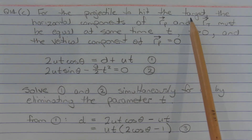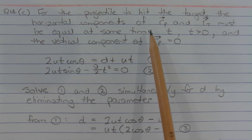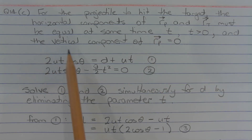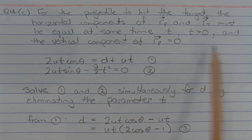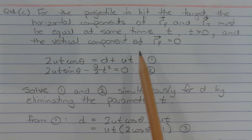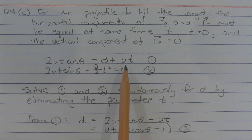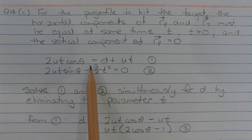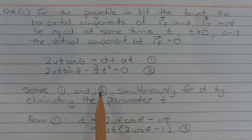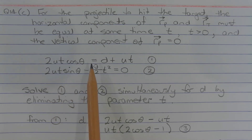For the projectile to hit the target, the horizontal components of vectors rp and rt must be equal at some time t, where t is greater than 0, and the vertical component of rp must also equal 0. We can express this with two equations. In the first equation, I've equated the horizontal components of the two vectors, so we have 2ut cos(theta) equals d plus ut. In the second equation, I've let the vertical component of rp equal 0, so 2ut sin(theta) minus g/2 times t squared equals 0.